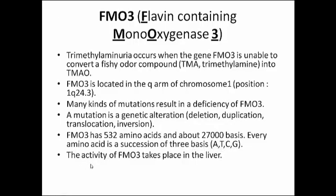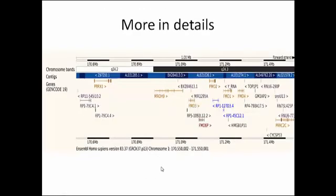Every amino acid is encoded by a succession of three bases: A, T, C, or G. The activity of FMO3 takes place in the liver, and in the case of trimethylaminuria, this activity could be enabled, disabled, or reduced.